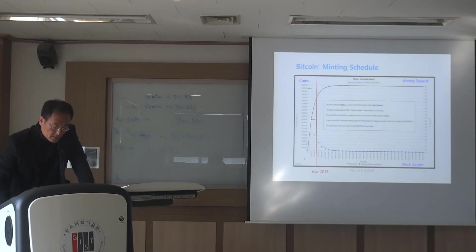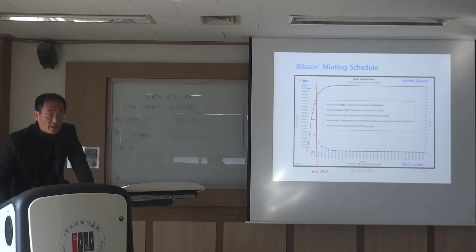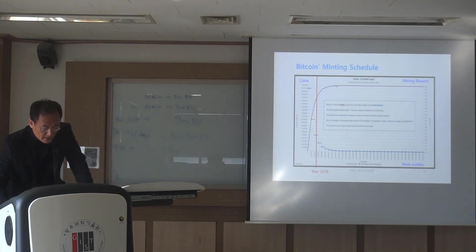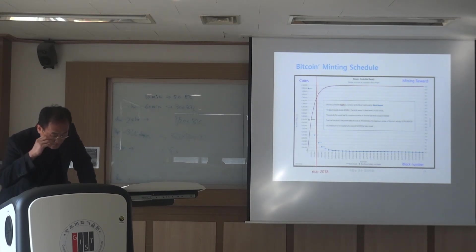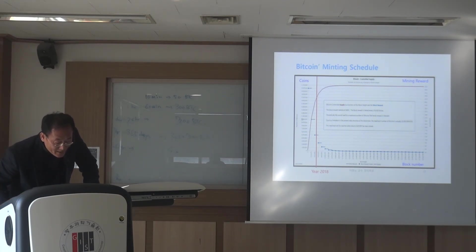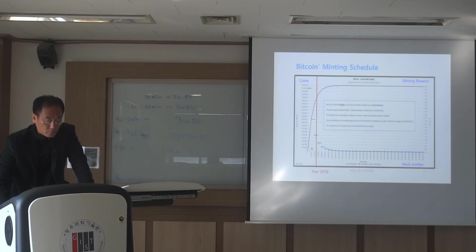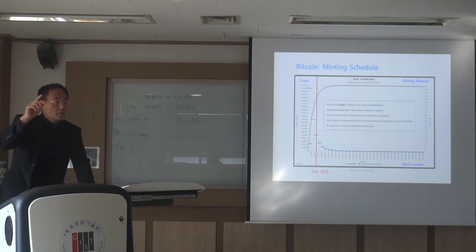So this is the block number. If you spend four years on average, there will be this many blocks created. For each block, 50 Bitcoin. And if you multiply them, that gives you 10 million. So 210,000 times 50 is 10 million.